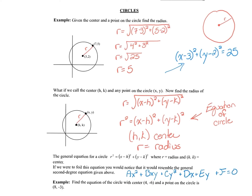To get the general form, you just FOIL out the center-radius form. Going back to the first problem, we FOIL (x − 3)² + (y − 2)² = 25, getting x² − 6x + 9 + y² − 4y + 4 = 25.